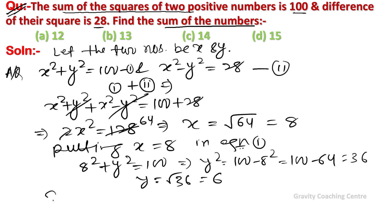According to the question, find the sum of the numbers. So sum of numbers equal to x plus y, equal to 8 plus 6, equal to 14, which is the required answer of this question. So option C is the correct answer.